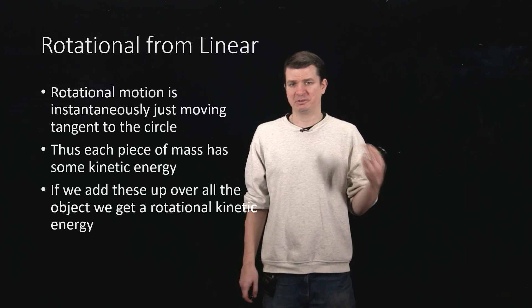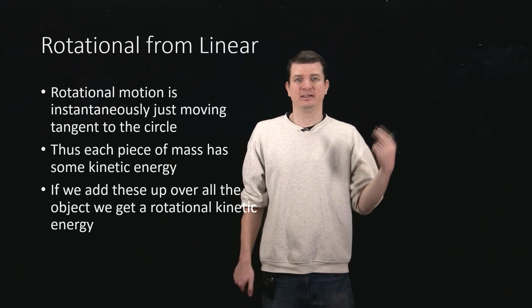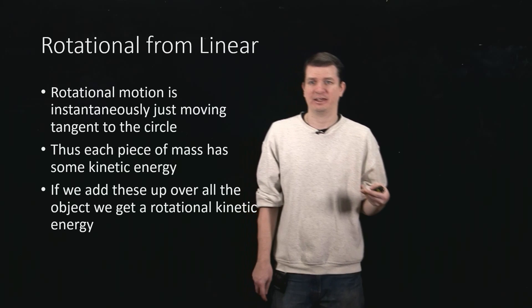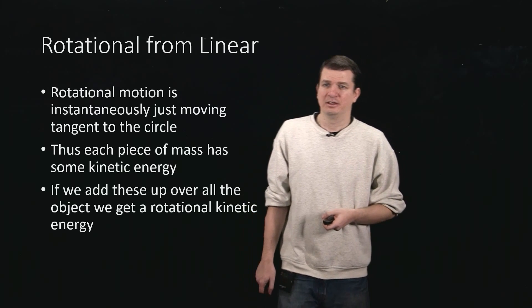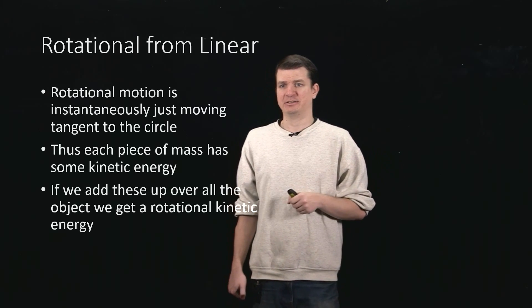If we're moving in a rotational motion, what we're doing is actually just moving in some circle that has some fixed radius. We're moving in a circle centered on our rotation axis.